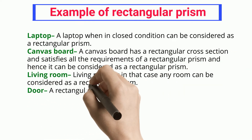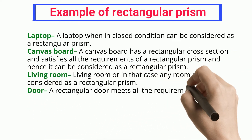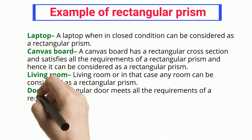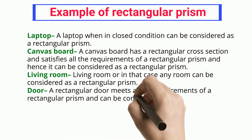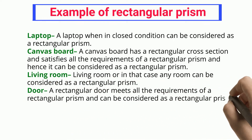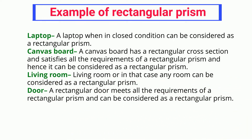Canvas board: a canvas board has a rectangular cross-section and satisfies all the requirements of a rectangular prism, and hence it can be considered as a rectangular prism.